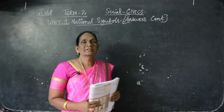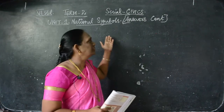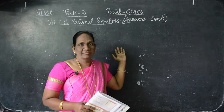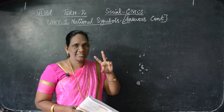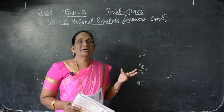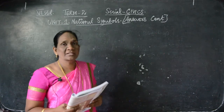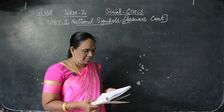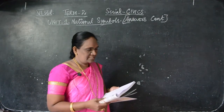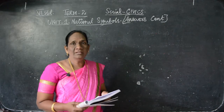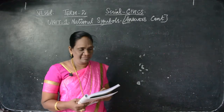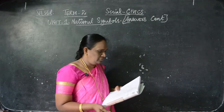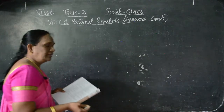Six standard children, I am going to give you the answers for the national symbols lesson — that is civics first lesson, term 2. We already finished choose the correct answer, fill in the blanks, and many roman letters. From roman letter 1 till roman letter 7 we finished in the previous classes. Now I am going to give you roman letter 8 and 9.